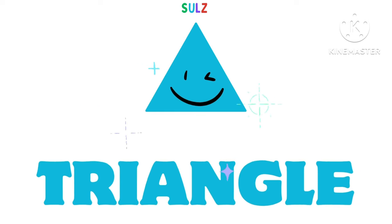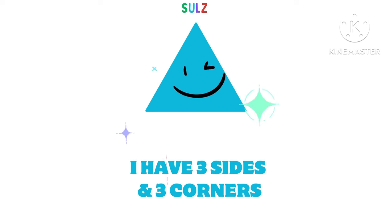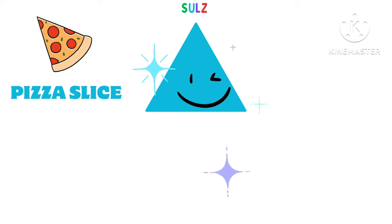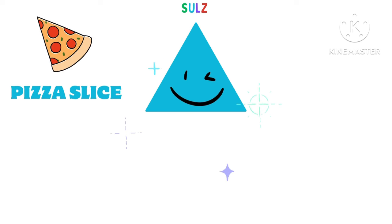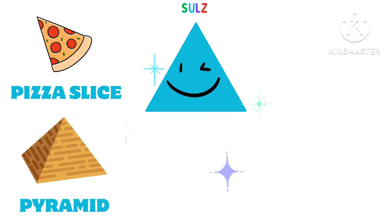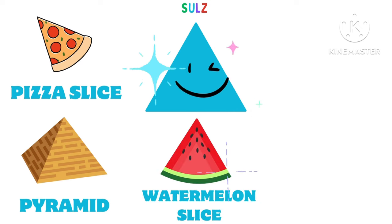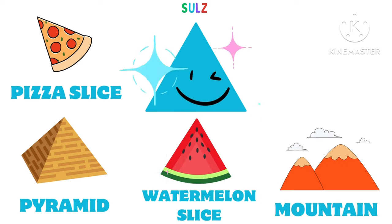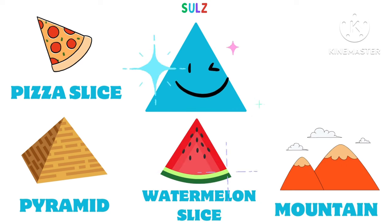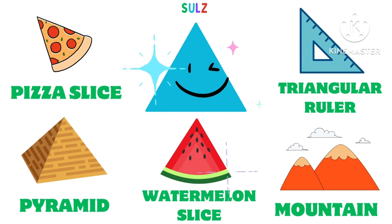Hi, I am triangle. I have three sides and three corners. You can see me in a pizza slice, pyramid, watermelon slice, mountain, and triangular ruler.